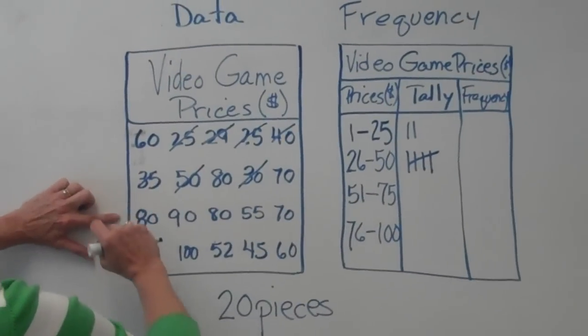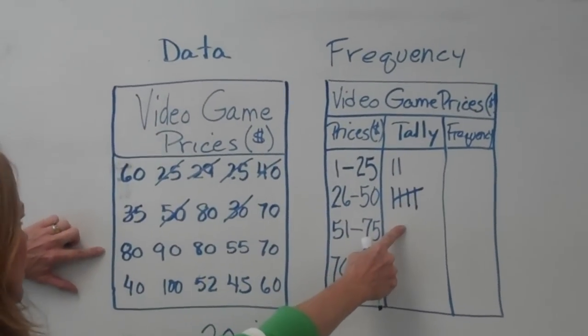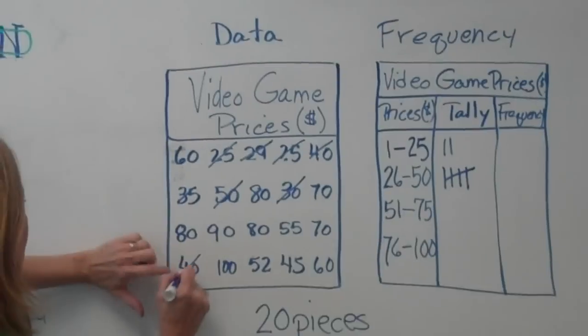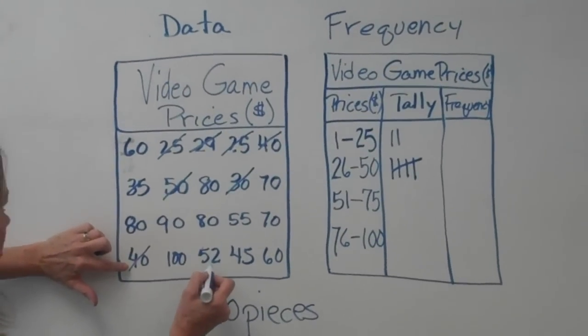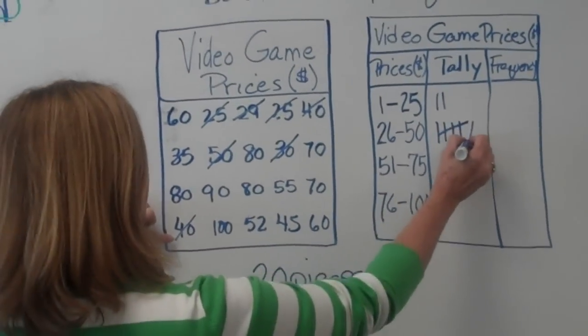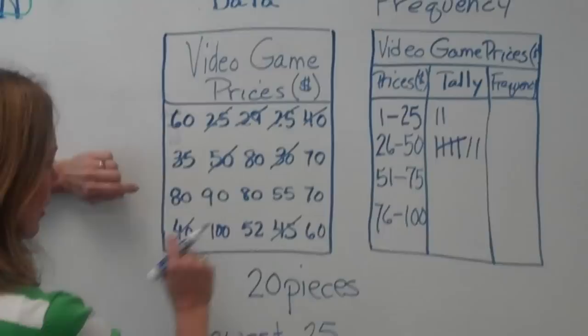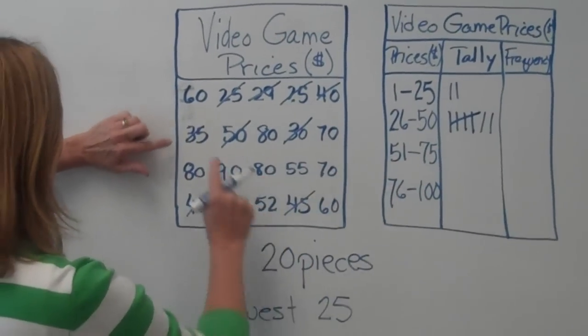Dropping down to our next interval, oh, excuse me, we didn't finish, did we? 26 to 50. Yep, we've got some more here folks, you've got to make sure you count them all, don't you? Here and here. Alright, I think we're finished with that interval. Go to the next.